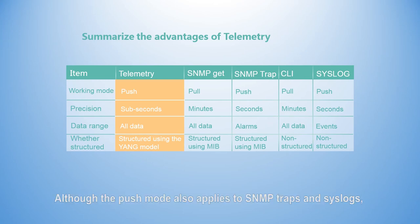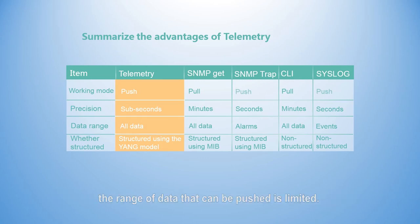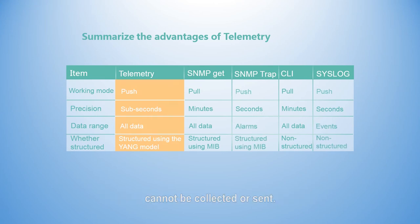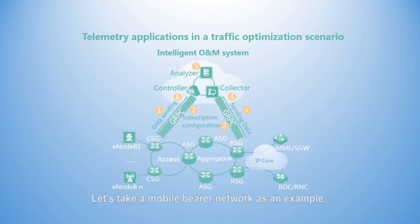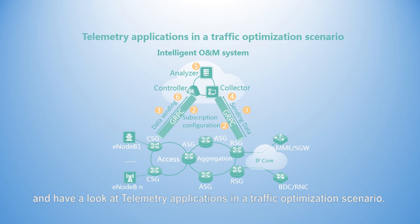Although the push mode also applies to SNMP traps and syslogs, the range of data that can be pushed is limited — monitoring data such as interface traffic data cannot be collected or sent. So let's take a mobile bearer network as an example and have a look at telemetry applications in a traffic optimization scenario.